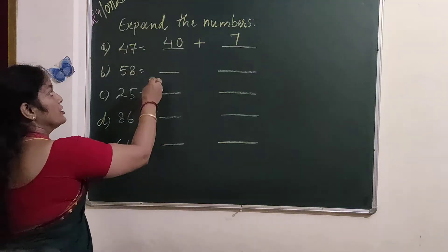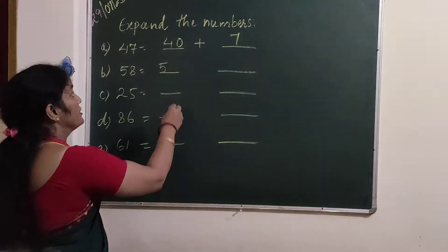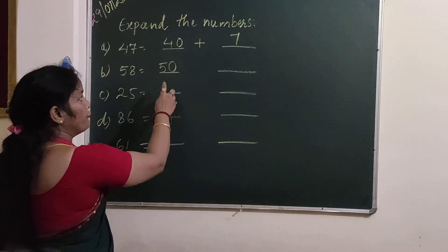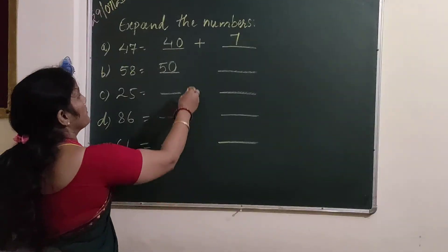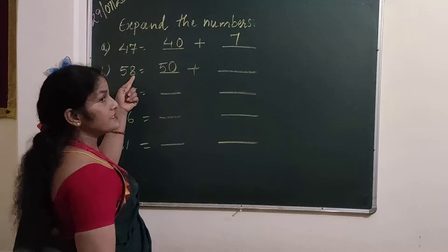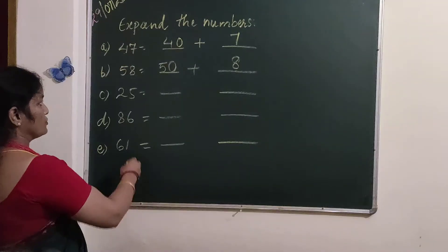First, you write 5. And instead of 8, you have to write 0. 50. Okay? Plus, what is this? 8. So 58.